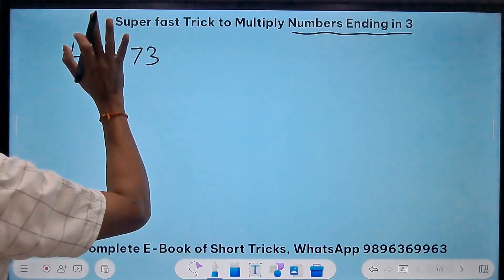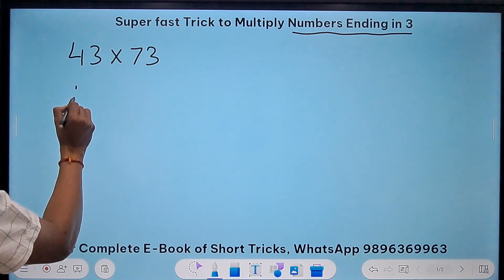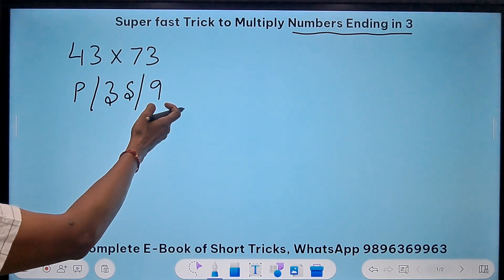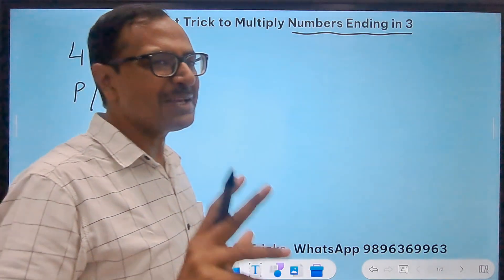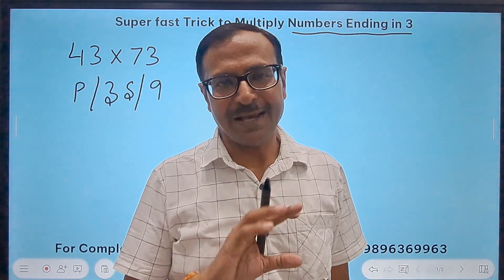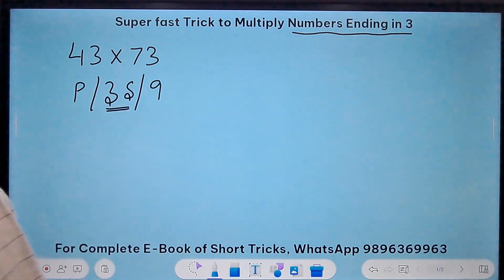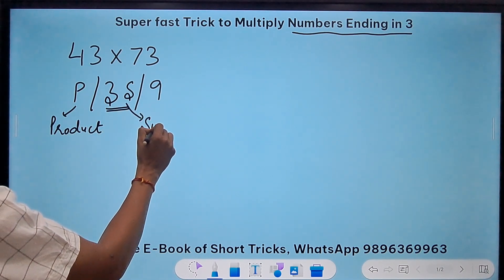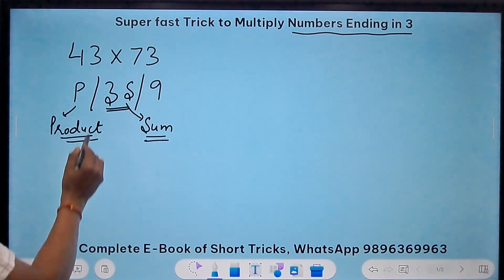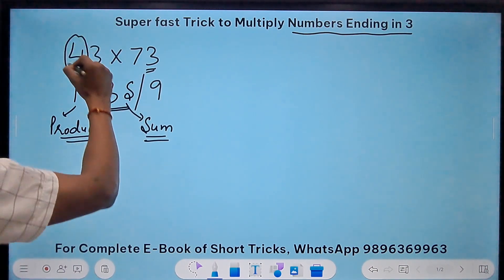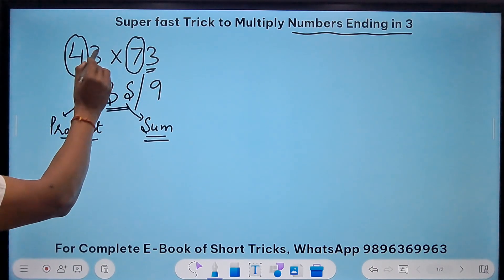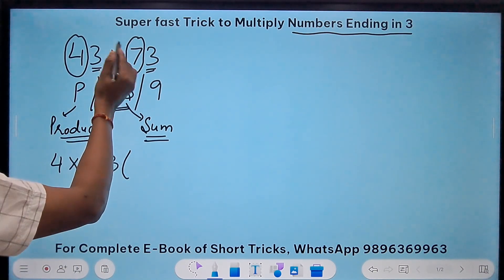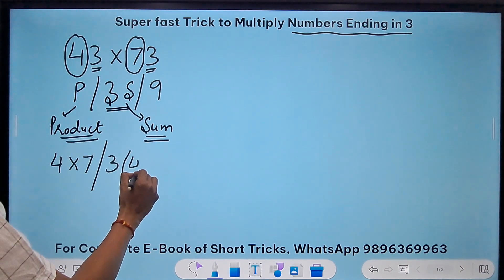Let's take two digit numbers first. Suppose I have 43 times 73. The trick which I am going to use, I will call the trick P3S9. P and 9 they look like mirror images, right? That makes it a little bit easier to remember. P and 9 are mirror images and in between we have 3S. Now what is P? P stands for the product, and obviously S will stand for the sum. Product of what, sum of what? Let's forget the 3s. We have a 4 here and a 7 here.